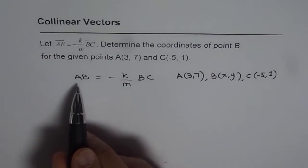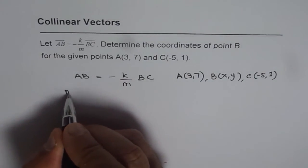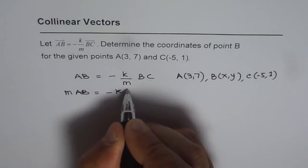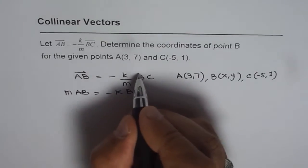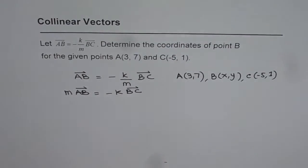When we say AB equals this we can cross multiply and we can say M times AB equals minus K times BC. So these are the vectors AB and BC. Let us put a line on top of them.